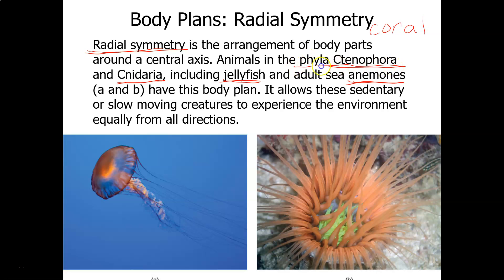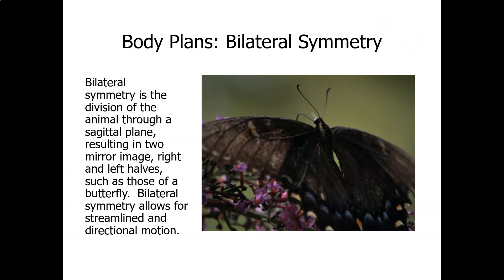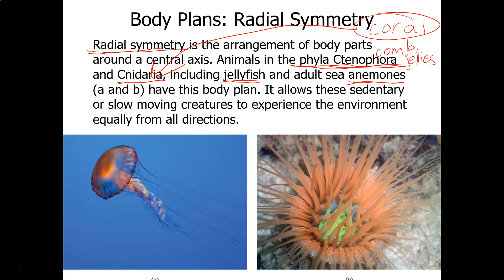The phylum ctenophora — the 'c' is silent — are the comb jellies. Comb jellies are not the same as true jellyfish. Both the ctenophora and the cnidaria have radial symmetry. The only difference is that the cnidaria have stinging cells and the ctenophora do not.